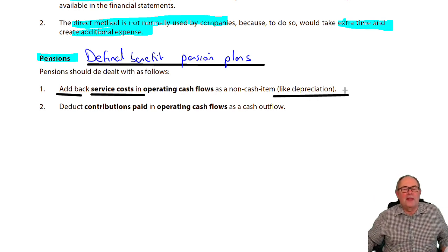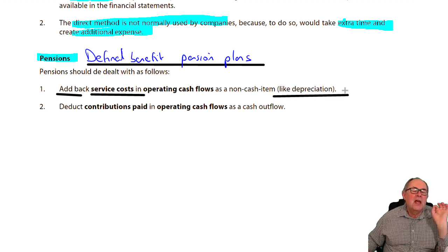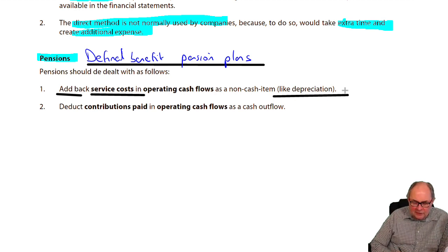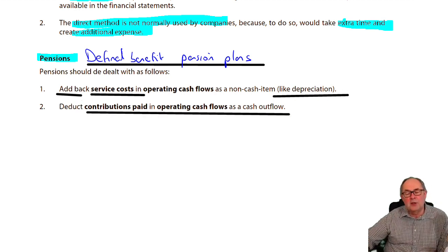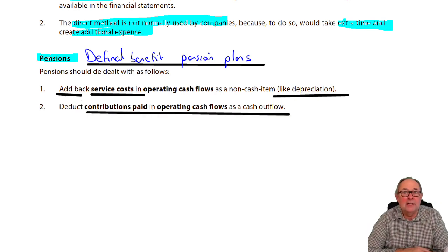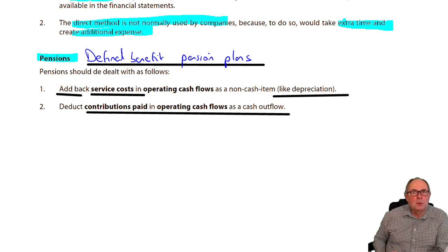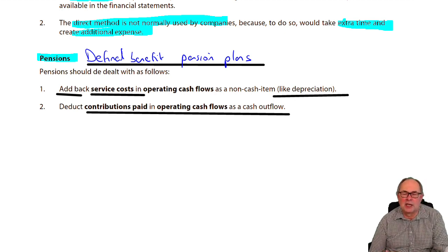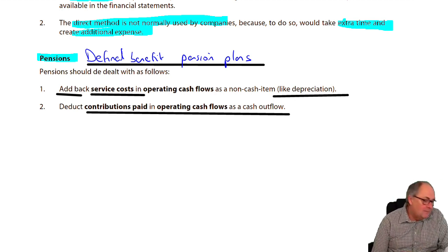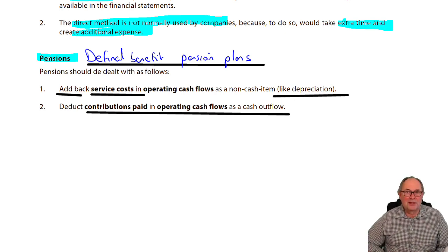Instead of the service cost, what they actually show is the cash flow — the money that is contributed to the pension plan by the reporting company. If that looks a bit alien to you, don't worry. But when you go through pensions, you'll see that jargon and can look back at this. Like many things, the number we put in the profit and loss is not necessarily the cash flow, so they have to make an adjustment — they take out the non-cash item and replace it with the cash item. And that's everything with cash flows.